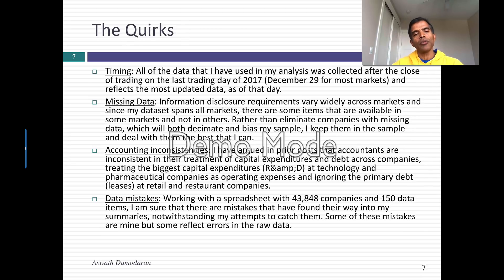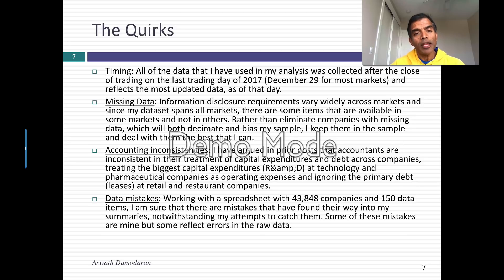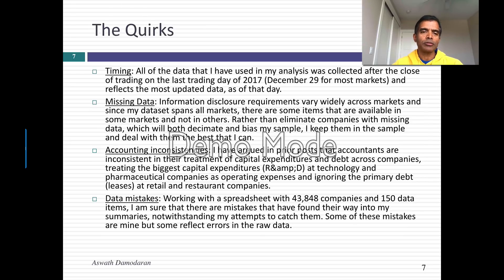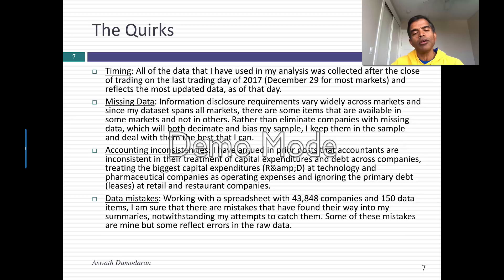Let's talk about the quirks I run into every year when I do this data analysis. The first is timing. I do all of my data collection and analysis over a five-day period. I started after close of trading on Friday, December 30th, and went all the way through last night. The data is updated as of the start of this year, but that updating is not the same across all my data. The market data is updated by the minute — it's as of end of trading on December 31st. So my interest rates and market prices are as of that day. My accounting data, on the other hand, reflects my most recent financials, and for most companies that means trailing 12-month data ending September 30th, 2017.